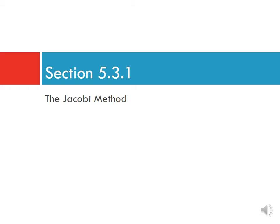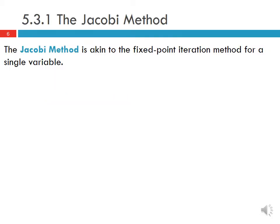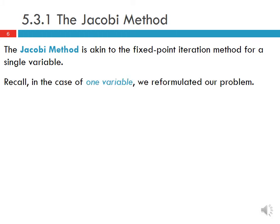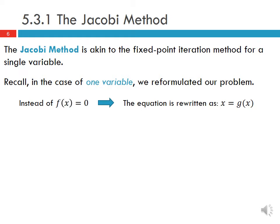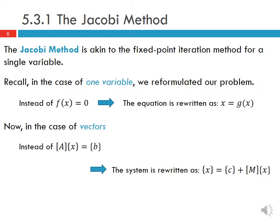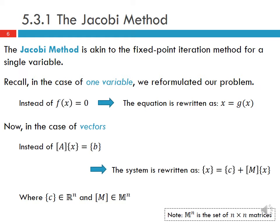The Jacobi method is akin to the fixed point iteration method for a single variable. Recall in the case of one variable we reformulated our problem: instead of saying f of x equals zero, the equation was rewritten as x equals g of x. Now in the case of vectors, instead of saying Ax equals b, the system is rewritten as x equals c plus M times x, where c is a vector in R-n and M is an n-by-n matrix. Similar to fixed point iteration, x appears on both sides of the equation.